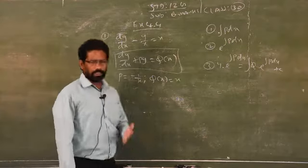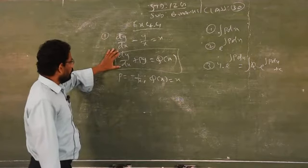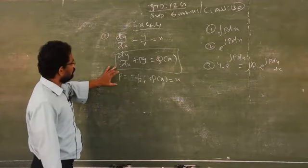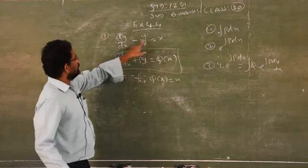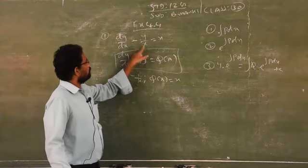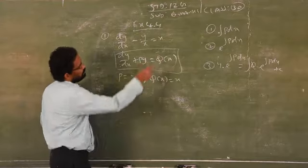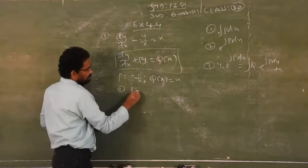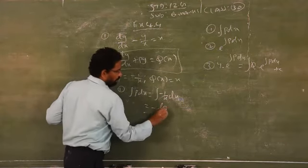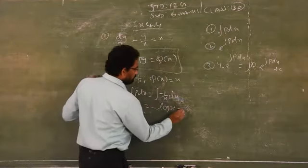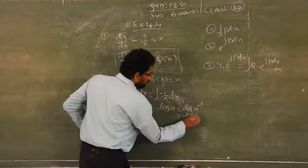Three rules, follow step by step, and you will get the answer. Compare the given question with general format. P = minus 1/x. Q(x) = x. First step: integration of P·dx = integration of (minus 1/x) dx = minus log x. Taking this as power of e: e^(minus log x) = e^(log(1/x)) = 1/x. Log cancels and we get 1/x.